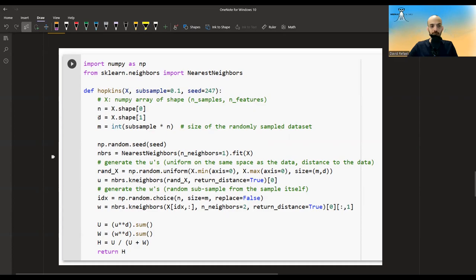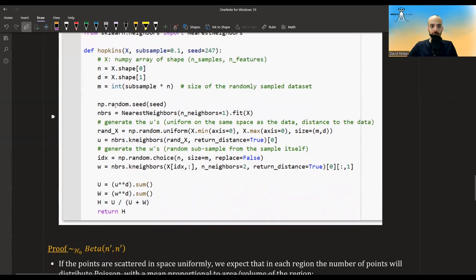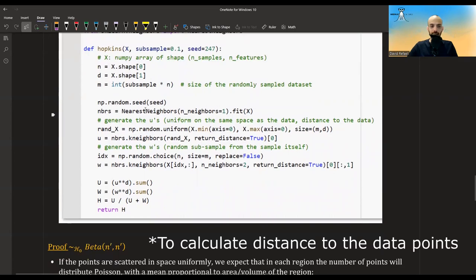So we are taking random samples from the data and sampling uniformly from the hypercube that encompasses the data. In order to get the same Hopkins statistic for the same data, we need to set some seed. Okay, I calculate the length of the data, the dimensionality of the data, the N' here I call it M, I set the seed, I call nearest neighbors.